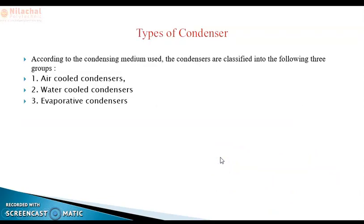There are three types of condensers classified according to the cooling medium: air-cooled condenser, water-cooled condenser, and evaporative condenser. According to our syllabus, we will cover the air-cooled condenser and the water-cooled condenser.